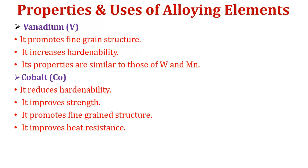Then vanadium: it promotes fine grain structure, increases hardenability, and its properties are similar to tungsten and molybdenum. And last, cobalt: it reduces hardenability, improves strength, promotes fine grain structure, and improves heat resistance.